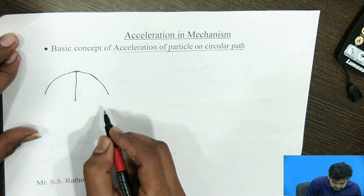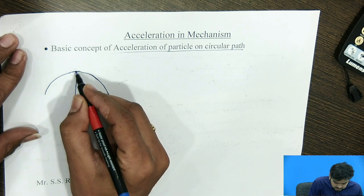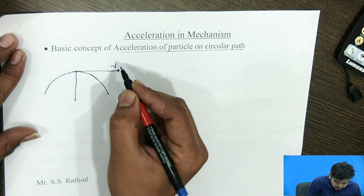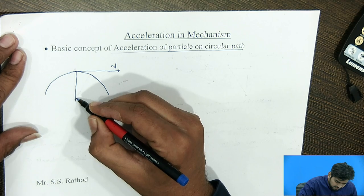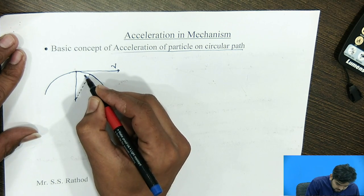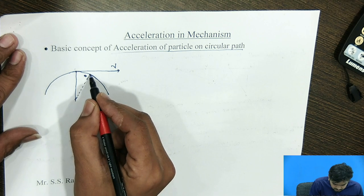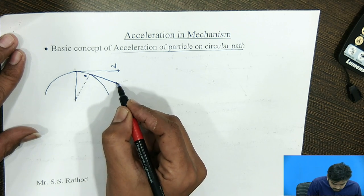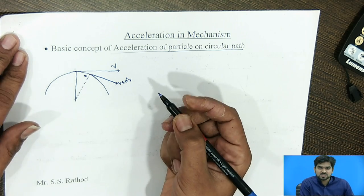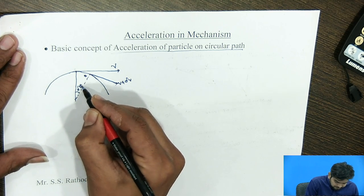If the particle is rotating in the circular path in the clockwise direction, then at this instant the velocity of particle A is V. After some interval of time, it will take a new position B. At that point, we get the new velocity as V plus delta V, giving us a change in velocity by an angle of delta theta.